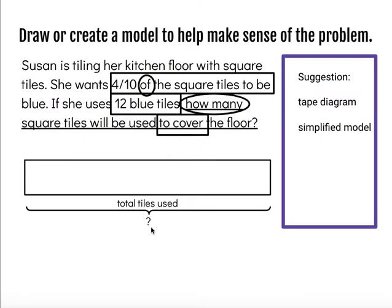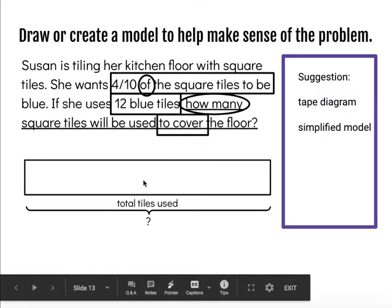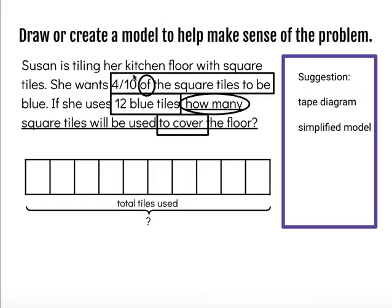My next step is to break the tape diagram down into as many parts as I need. And in this case, I need ten equal parts. So I'm going to split that into ten equal sections. And since four out of ten are blue, I'm going to go ahead and highlight four out of ten of those as blue tiles. I also know that four out of ten, the fraction, is equivalent to twelve blue tiles. So I'm going to label that. Four tenths and twelve are equivalent in this situation.